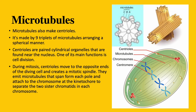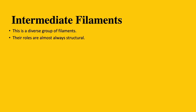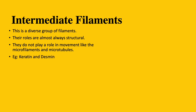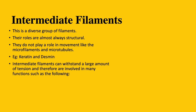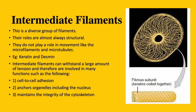That ends our section on microtubules. Now let's finally go into intermediate filaments. Intermediate filaments is a category that refers to a diverse group of filaments. Their roles are almost always structural rather than movement related. Some examples of intermediate filaments include keratin and desmin. Keratin is an important protein that makes hair, skin, and nails. Desmin is a muscle-specific protein. Intermediate filaments can withstand a large amount of tension and therefore are involved in many functions such as cell-to-cell adhesion, anchoring organelles including the nucleus within the cell, and maintaining the integrity of the cytoskeleton.